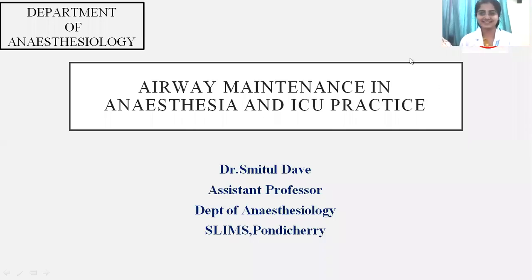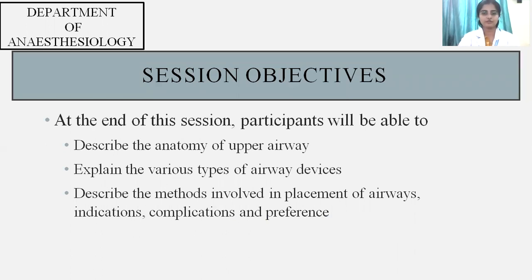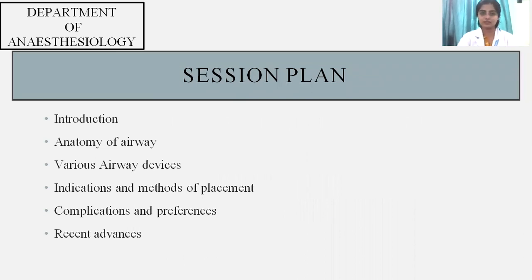Good morning everyone. Today we are going to talk about airway maintenance in anesthesia. The main objectives for this session are that the student should be able to describe the anatomy of the upper airway, explain the various types of airway devices, and describe the methods involved in treatment of airway — including indications, complications, and preferences. The session covers introduction, anatomy of airway, various airway devices, indications and methods of treatment, complications and preferences, and recent advances.